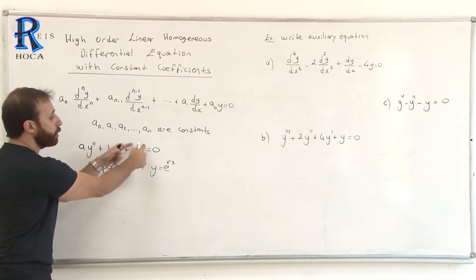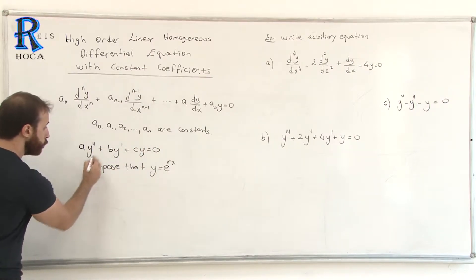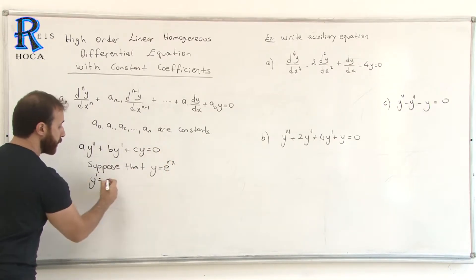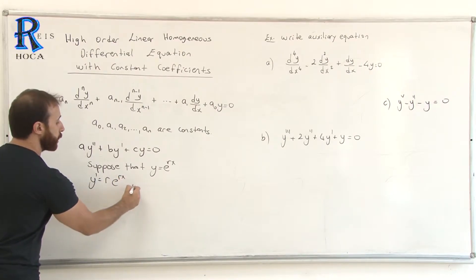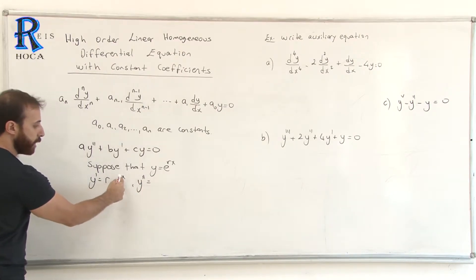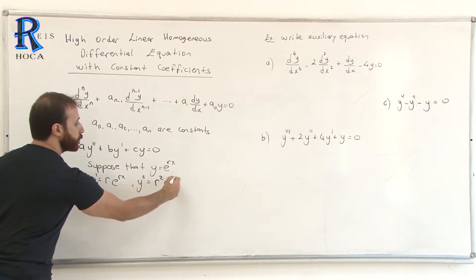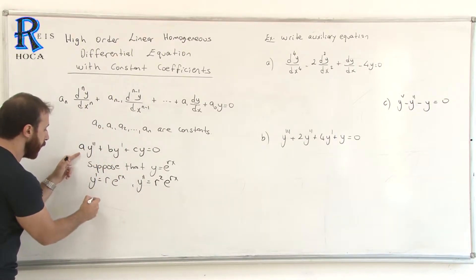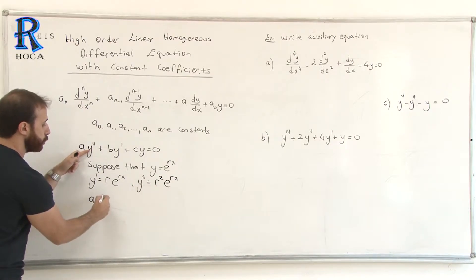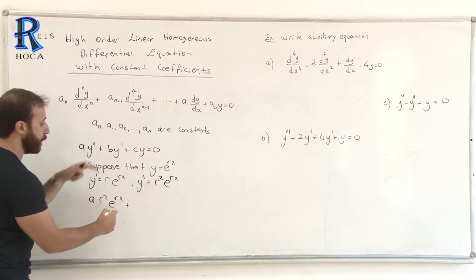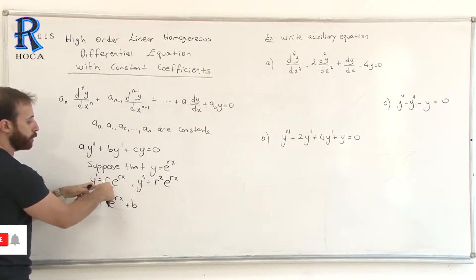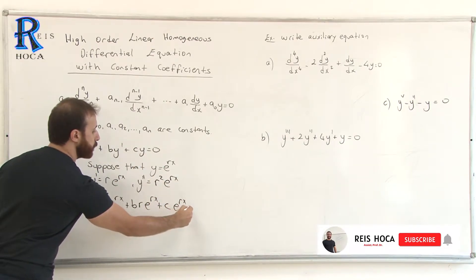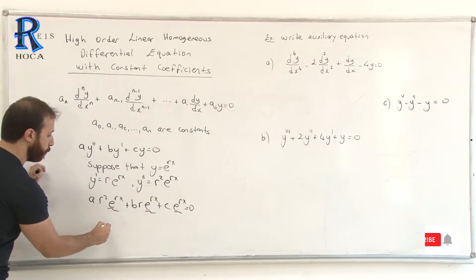We need y'', y', and y for this differential equation. y = e^(rx), so y' = r·e^(rx) (derivative of the exponent times the same function), and y'' = r²·e^(rx). Substituting into the equation: a·r²·e^(rx) + b·r·e^(rx) + c·e^(rx) = 0. Since e^(rx) is a common factor, we factor it out.